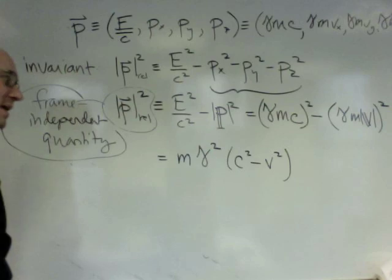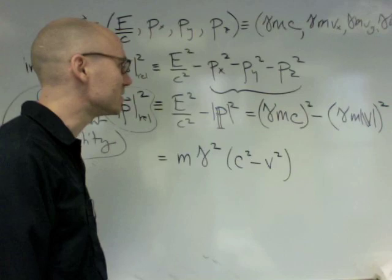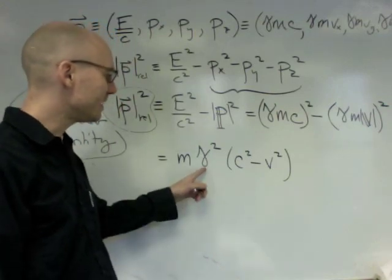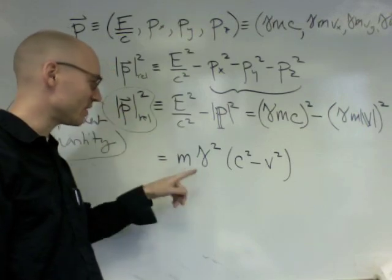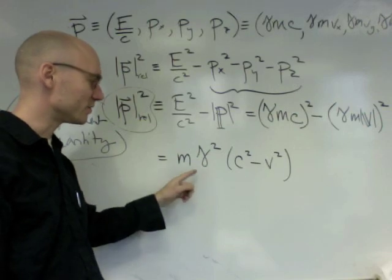Now, you should immediately see that we're done. It might not be completely obvious to you. But remember, gamma is 1 over 1 minus beta squared, all square rooted.